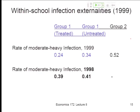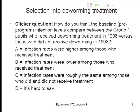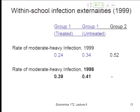B is technically correct in that infection rates were slightly lower among those who received treatment, but they're so close that C — infection rates about the same — kind of feels like the right answer. It isn't like there's very sharp selection.